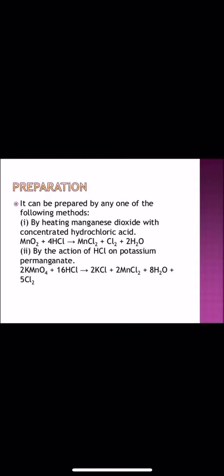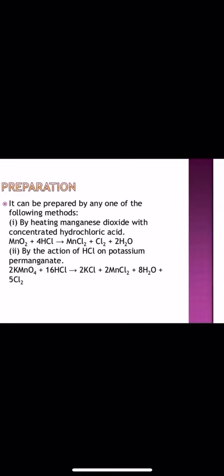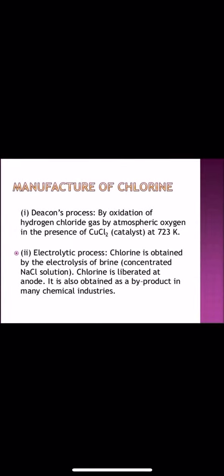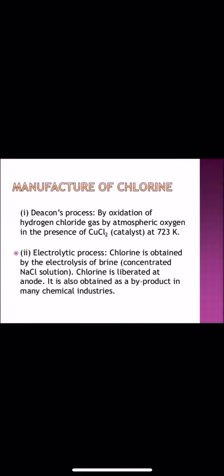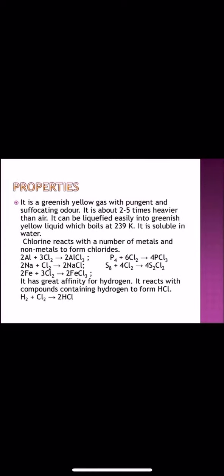How is chlorine prepared? It is prepared in the laboratory when you heat manganese dioxide with concentrated HCl, and by the action of HCl on potassium permanganate. In class 11th, you have done MnO2 and HCl. Chlorine is manufactured by Deacon's process by oxidation of hydrogen chloride gas by atmospheric oxygen in the presence of CuCl2. It is also prepared by electrolytic process, by electrolysis of brine. It is liberated at anode. And it is also obtained as a by-product in many chemical industries.